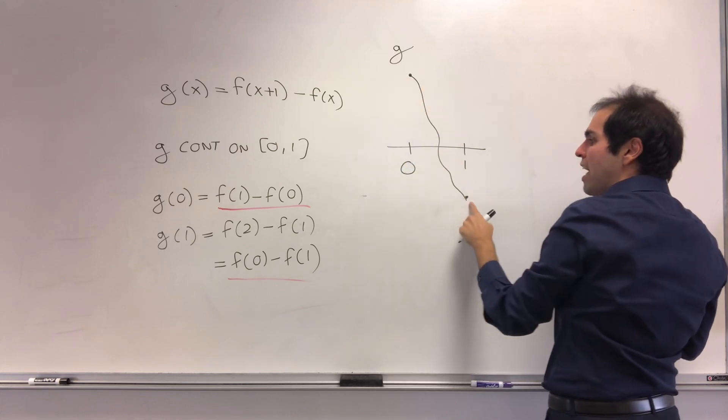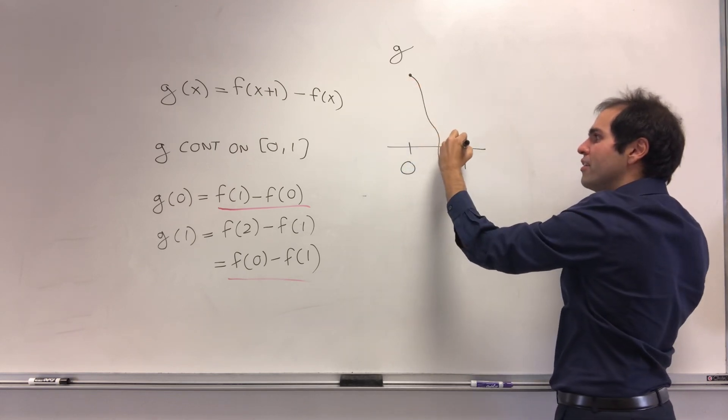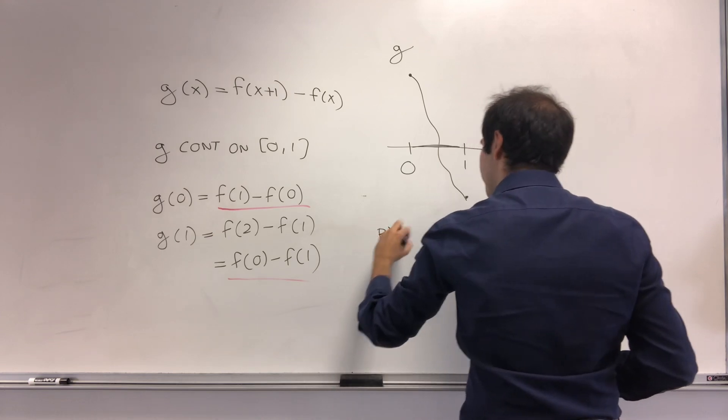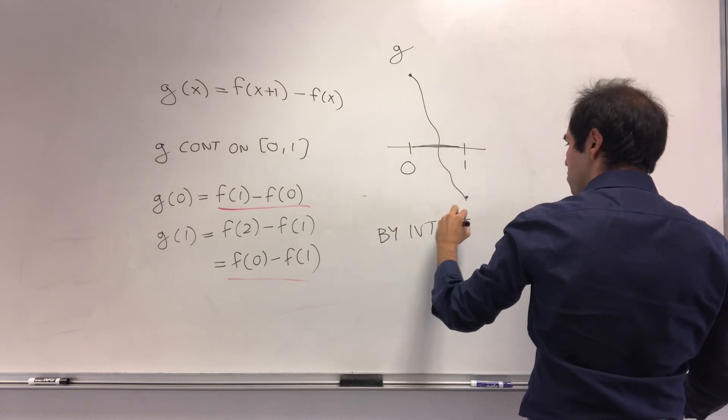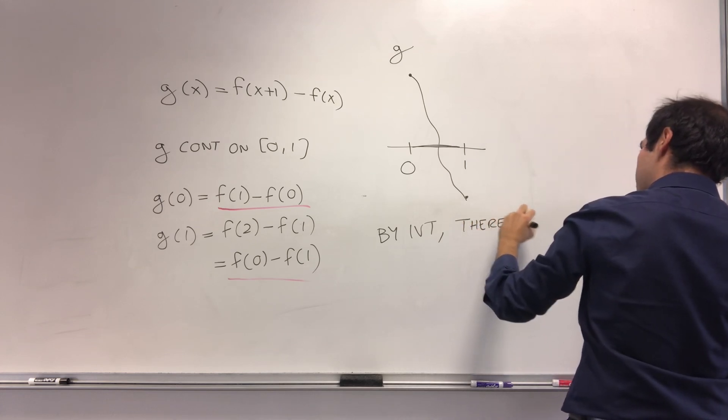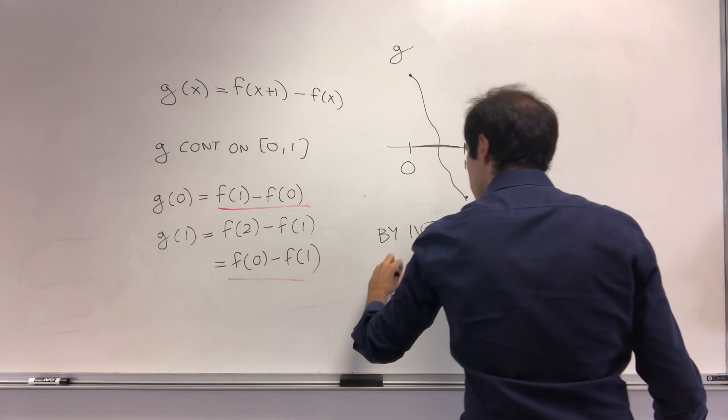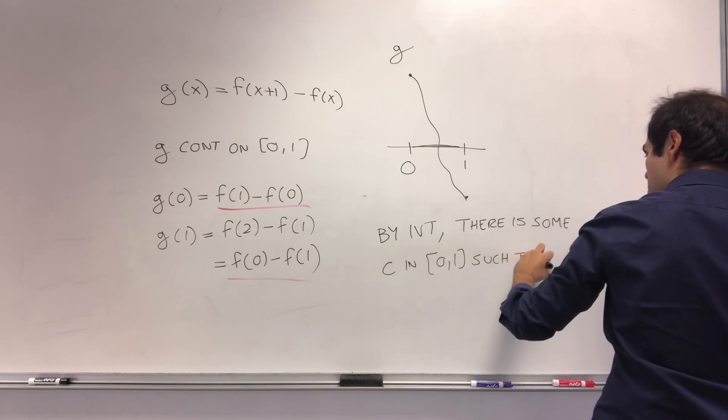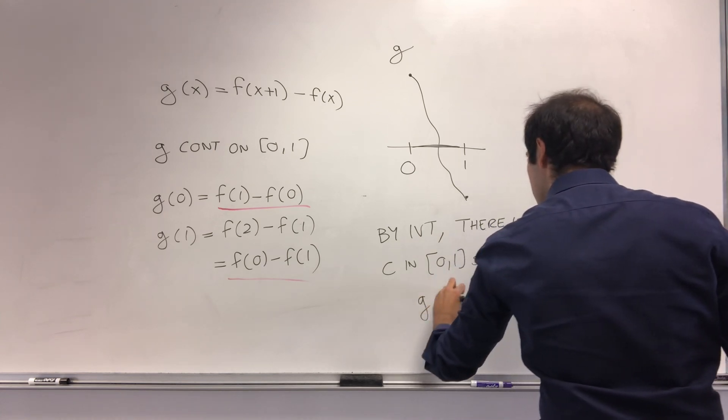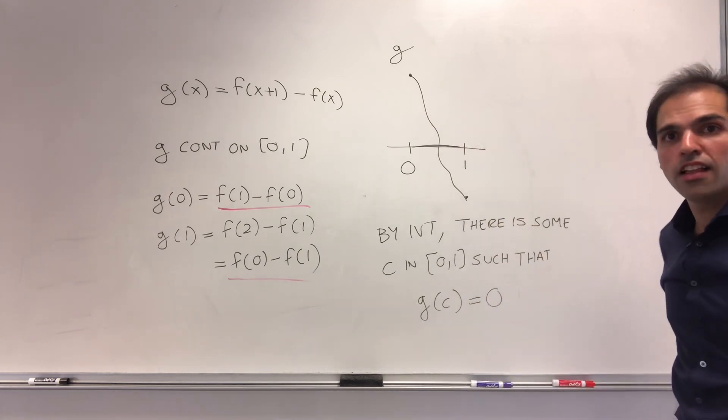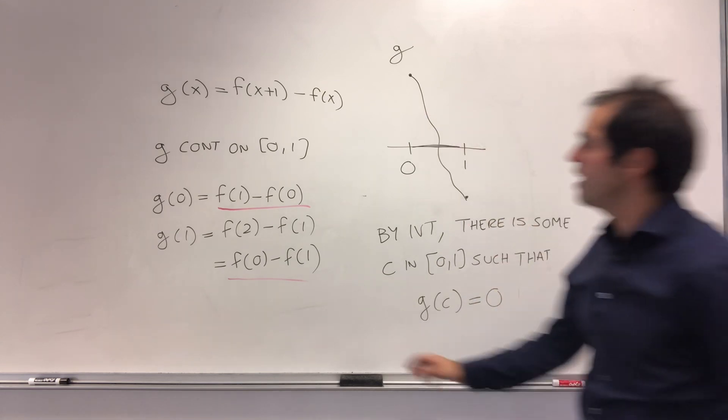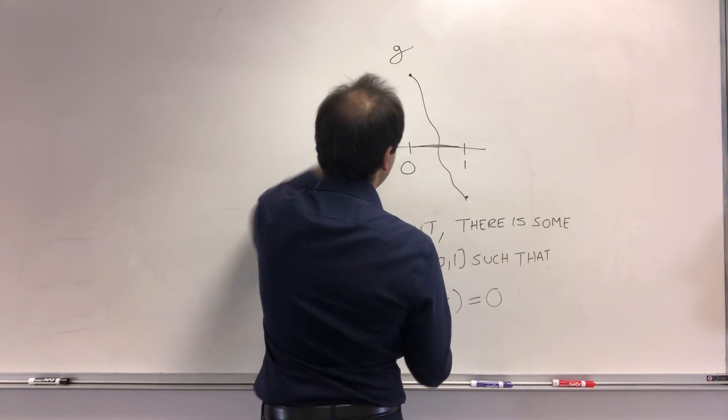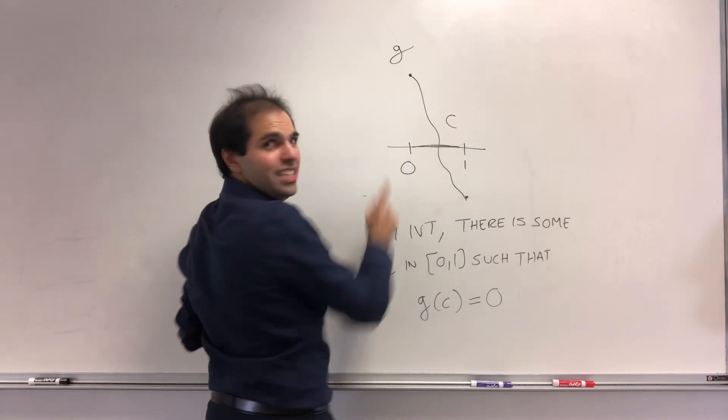So by the intermediate value theorem, it has to cross the x-axis somewhere. So by IVT, there is some c in [0,1] such that g(c) = 0. But what does that tell us in terms of our function? It tells us f(c+1) - f(c) = 0. This is our c, if you wish.